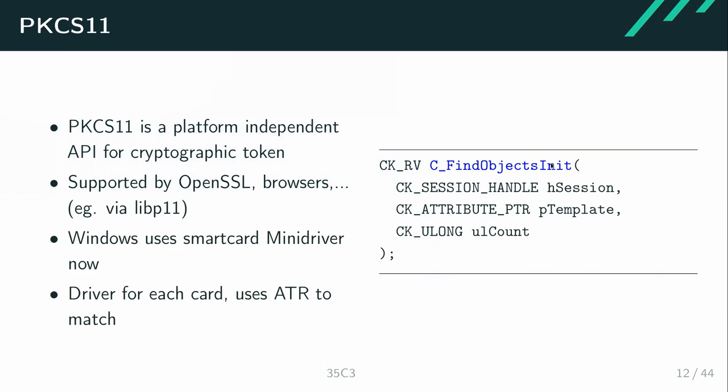On top of PC/SC there's usually another abstraction layer that doesn't talk about smart cards anymore but about cryptographic tokens. You can use a smart card there or a soft token. This layer is standardized — your browser uses it, OpenSSL uses it. It's quite generic. If you write a driver for a smart card, you typically implement this interface and use the PC/SC interface to communicate with the card.